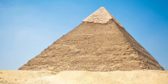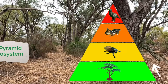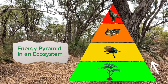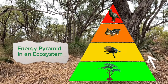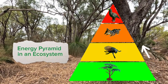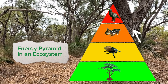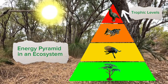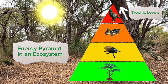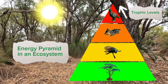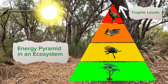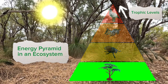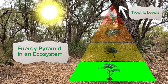Not that kind of pyramid. This shows that energy flows through an ecosystem. Energy flows from the bottom up through what are known as trophic levels. It actually all starts with a ray of sunshine. So let's take a look at the first trophic level where the energy is captured.